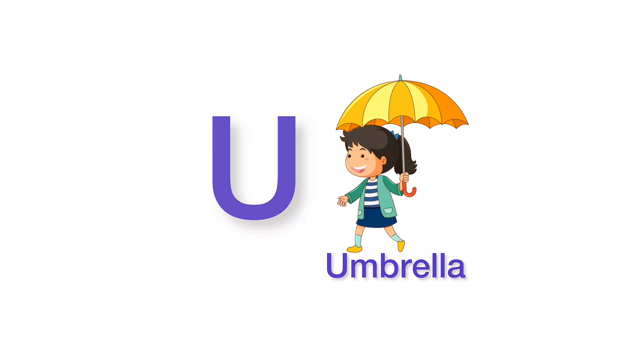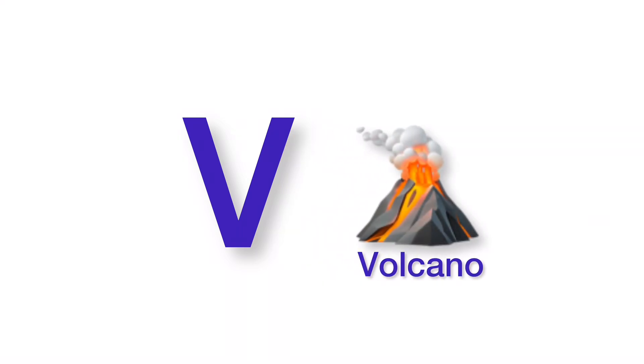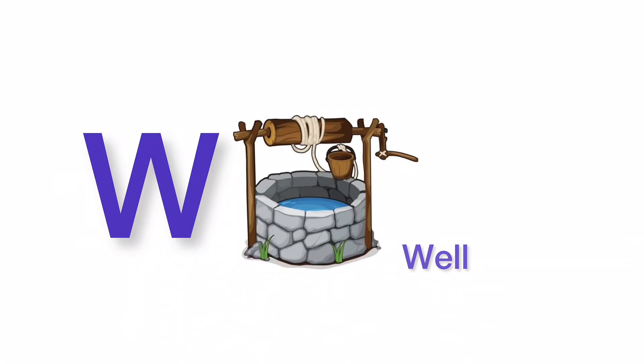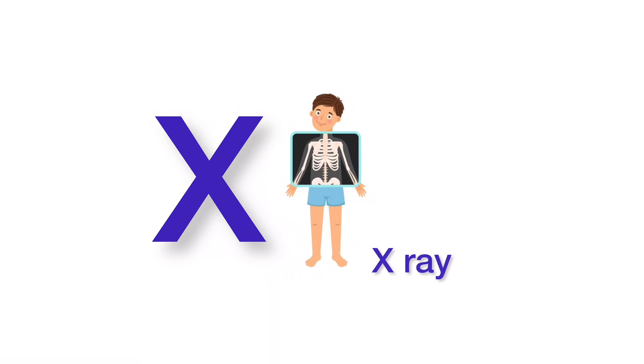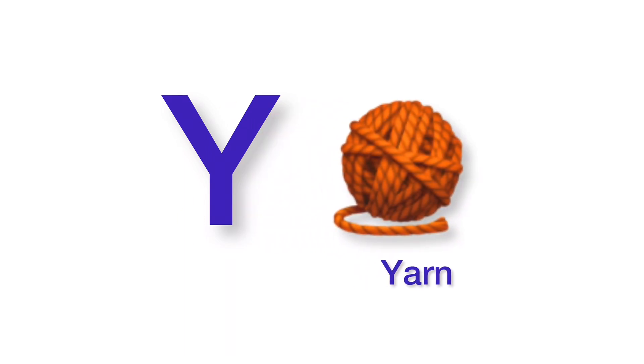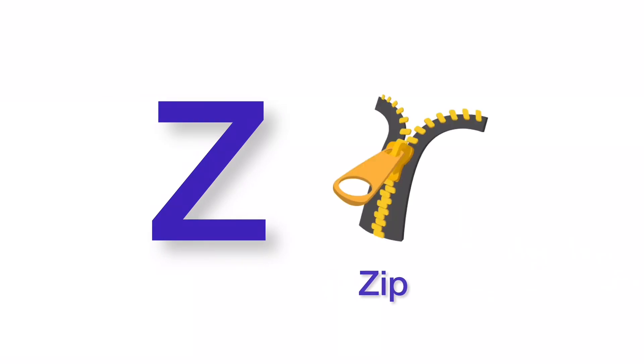U. U for Umbrella. V. V for Volcano. W. W for Well. X. X for X-ray. Y. Y for Yarn. Z. Z for Zip.